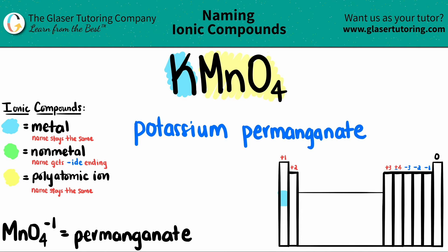And then just double check: since potassium is not a transition metal, just a regular metal, we do not need a Roman numeral. So this is the full answer. KMnO4 is potassium permanganate. That's it.